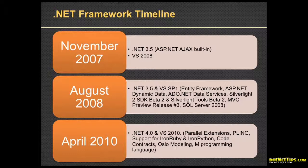So 3.5 Service Pack 1 was a really big change. Then in April 2010, we got the brand-new version of .NET — truly brand-new from the ground up. We got parallel extensions, which means we can now take direct advantage of multiple cores in your processor, which we could not do before in .NET. We also got PLINQ, direct support for IronRuby and IronPython, and code contracts.